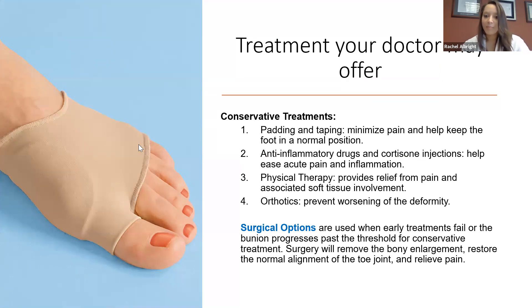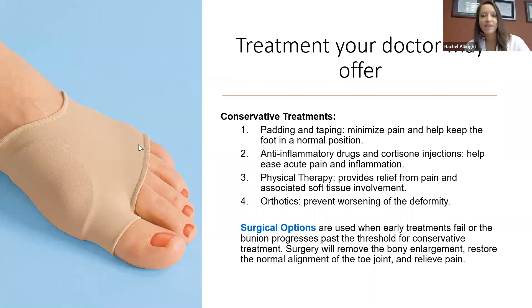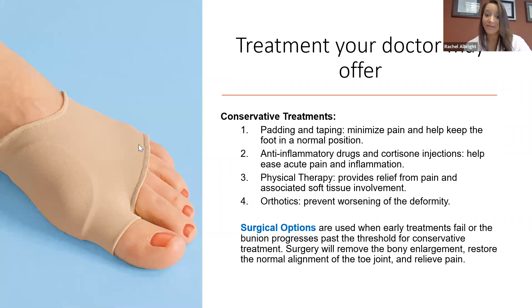Physical therapy can have good results. Orthotics are typically one of the first-line treatments — a rigid sole placed inside the shoe that allows the foot to function more efficiently, reducing pain. Those are conservative treatments. Surgery is the only way to make the joint normal again. There's no evidence that conservative treatments will fix the joint; they may just help it feel better. Surgery removes the bony prominence on the side and restores normal alignment, relieving pain.